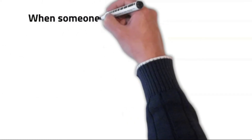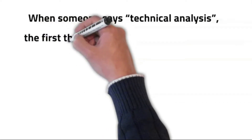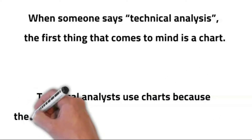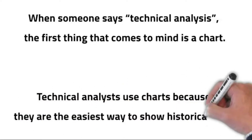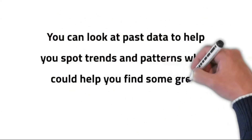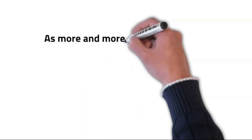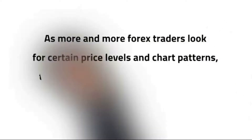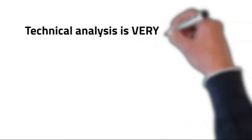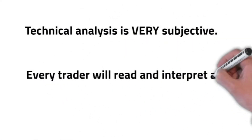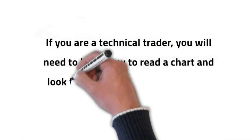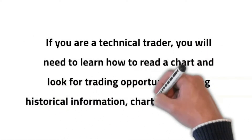In the world of trading, when someone says technical analysis, the first thing that comes to mind is a chart. Technical analysts use charts because they are the easiest way to show historical data — technical analysts live, eat, and breathe charts. You can look at past data to help you spot trends and patterns which could help you find great trading opportunities. As more Forex traders look for certain price levels and chart patterns, the more likely those patterns will manifest in the markets. You should know that technical analysis is very subjective — every trader will read and interpret a chart differently. As a technical trader, you will need to learn how to read a chart and look for trading opportunities using historical information, charts, and indicators.